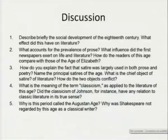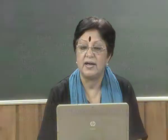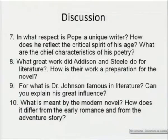Why is this period called the Augustan age? Why was Shakespeare not regarded by this age as a classical writer? In what respect is Pope a unique writer? How does he reflect the critical spirit of his age in different ways, whether in his poetry or in his prose? What are the striking characteristics of his poetry? What great work did Addison and Steele do for literature? They were the beginners and initiators of the journals and periodicals.